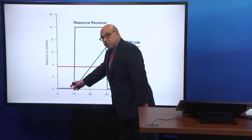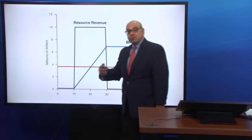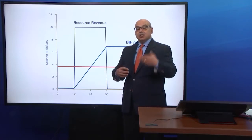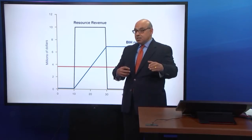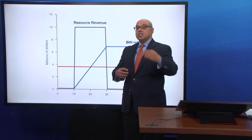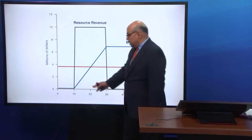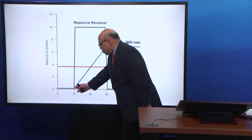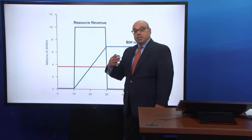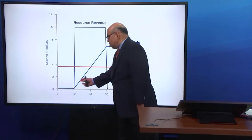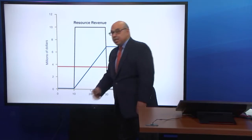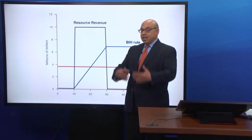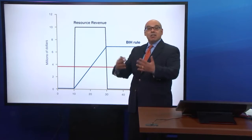BIH rules that out. It says you only pay yourself the interest as a function of your asset accumulation. So if no assets are in the bank, the government is not spending anything, and that's why the path is zero all the way. If you follow Bird-in-Hand, you only start consuming when you're actually getting resource revenue, and then you use some and put the rest in the bank, or a sovereign wealth fund.